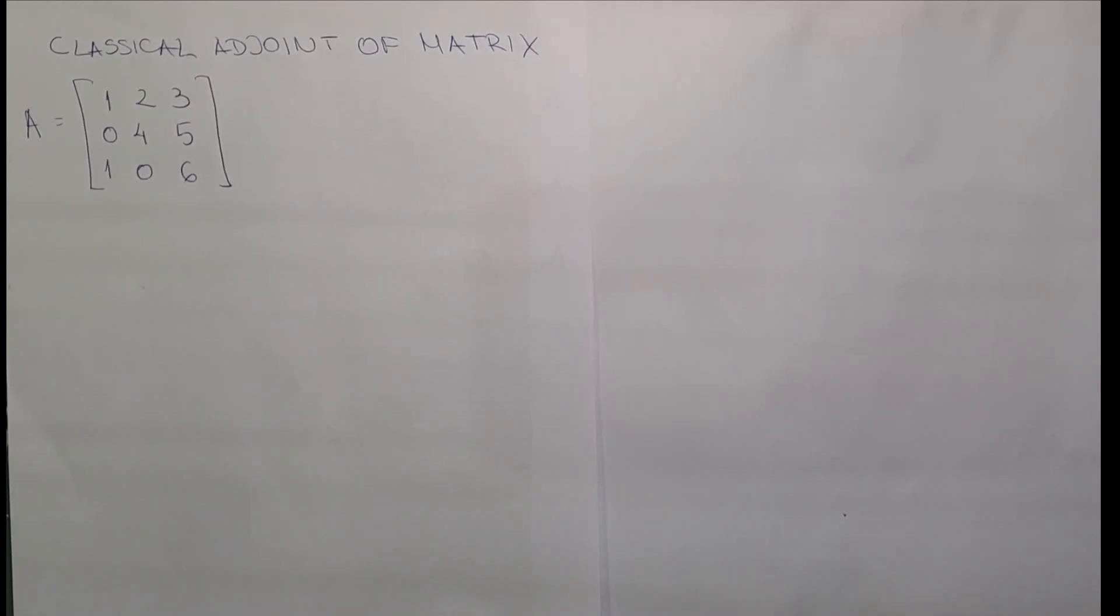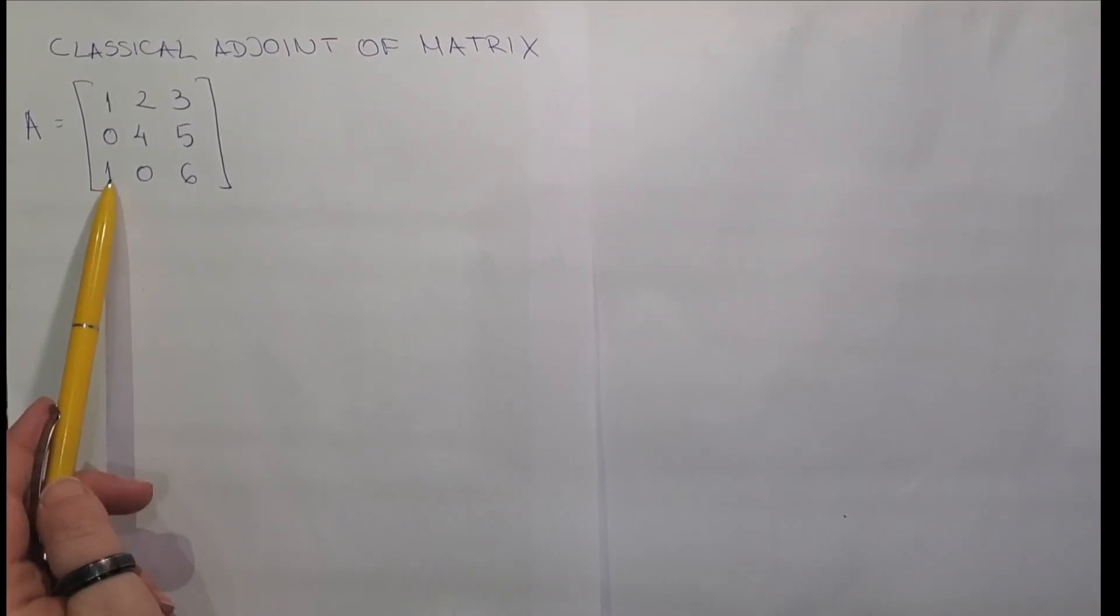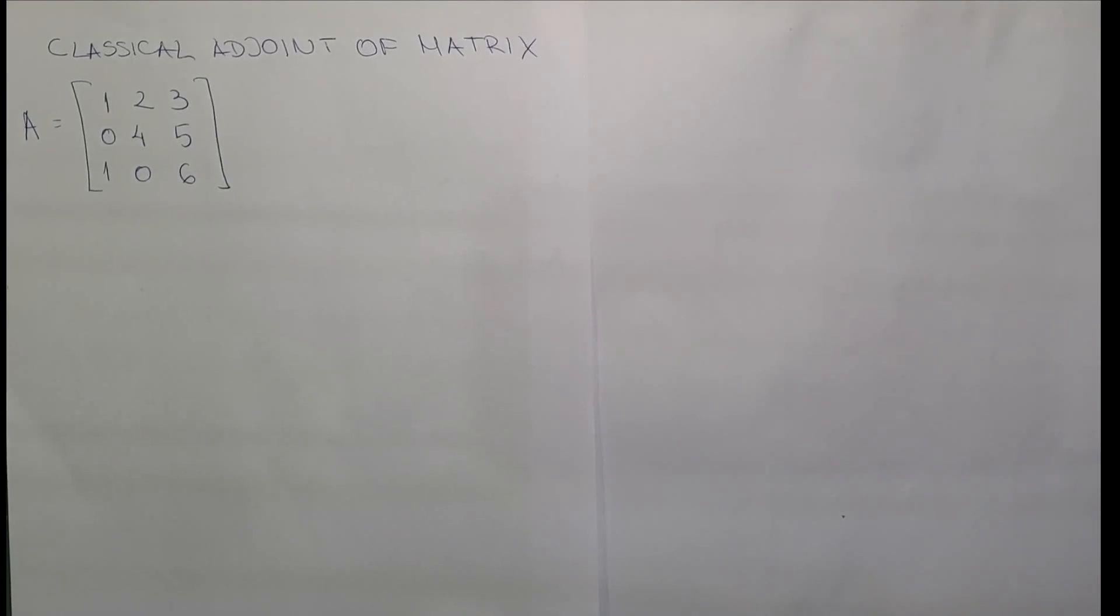Here is the example. Find the classical adjoint of the following matrix. First, we need to find the cofactor of each minor element.